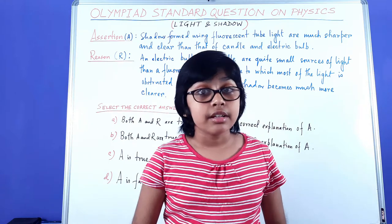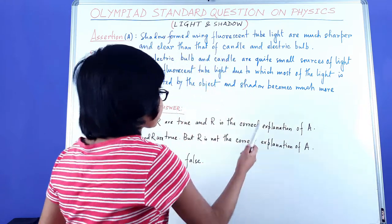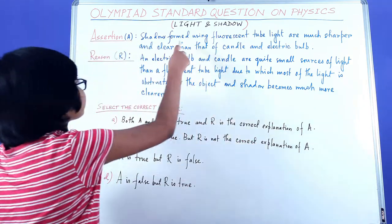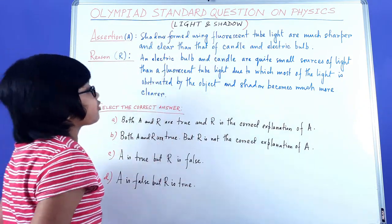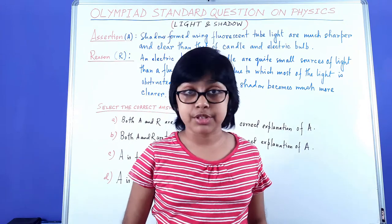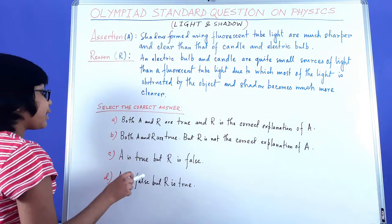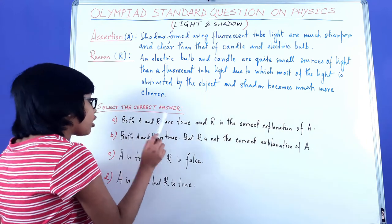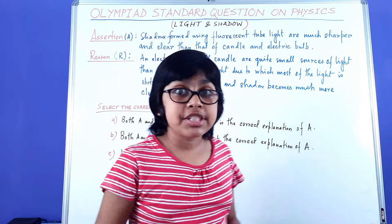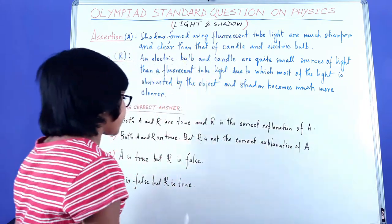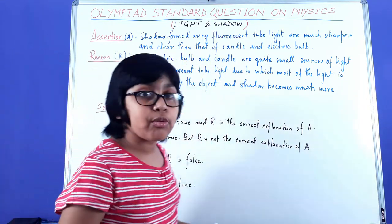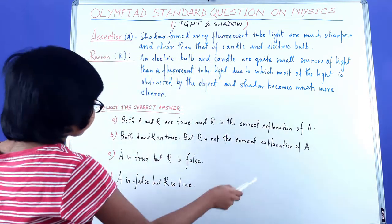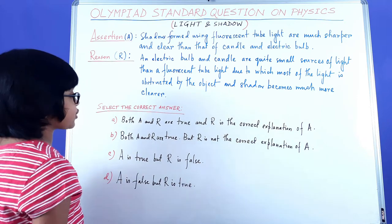Then we move on to understanding whether R is the correct explanation of A or not. On the other hand, if any one of them is wrong, you can immediately eliminate options A and B, because there's no scenario where both A and R will be true. Then we decide which one is wrong and which is correct — whether A is true but R is false, or A is false but R is true.